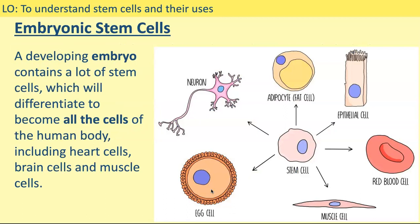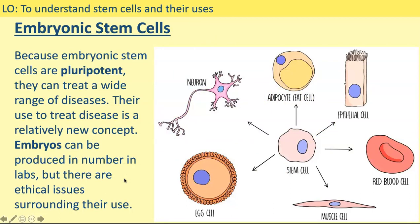The first type of stem cell we're going to look at is embryonic stem cells. When an egg cell is fertilised by a sperm cell, the cells will start to divide and eventually an embryo is formed. Embryos contain a lot of stem cells because an embryo is going to grow and develop quite a lot while it's in the womb, so their cells can differentiate into the different types of cells an embryo will need. Embryonic stem cells have the ability to become all of the cells found in the human body, including heart cells, brain cells, and muscle cells. Because embryonic stem cells are what we call pluripotent, they can treat a wide range of diseases. Pluripotent means they have the ability to differentiate into lots of different types of cells.